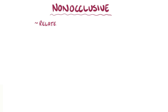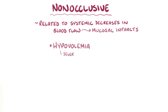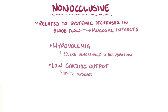Non-occlusive causes of small bowel ischemia and infarction are related to systemic decreases in blood flow, and they usually cause mucosal infarcts. This can happen in the setting of hypovolemia due to severe hemorrhage or dehydration, or low cardiac output conditions like after a myocardial infarction.